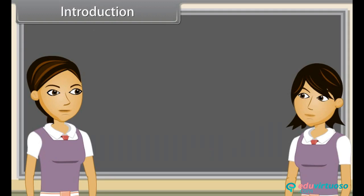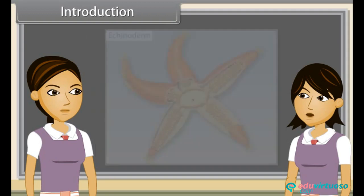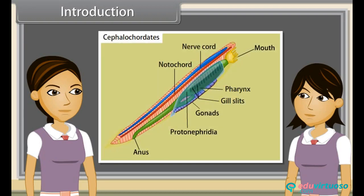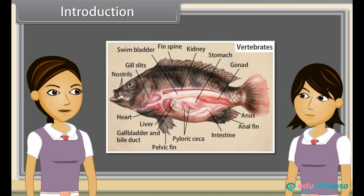While in molluscs, it is kidneys. Similarly, in echinoderms, excretory organs are dermal papulae. While in urochordates, it is neural gland, and in cephalochordates, it is protonephridia. In vertebrates, excretory organs are one pair of kidneys.